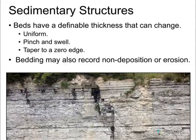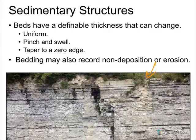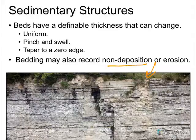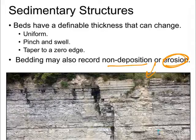Beds definitely have thickness, and that can change. Sometimes they can be thick on one side and thin on another. If you take a look at this picture, you can see it's not uniform all the way across because that depends on the environment. Sometimes we can also see non-deposition and erosion recorded in the rock — we'll talk more about this when we get to the geologic time chapter.